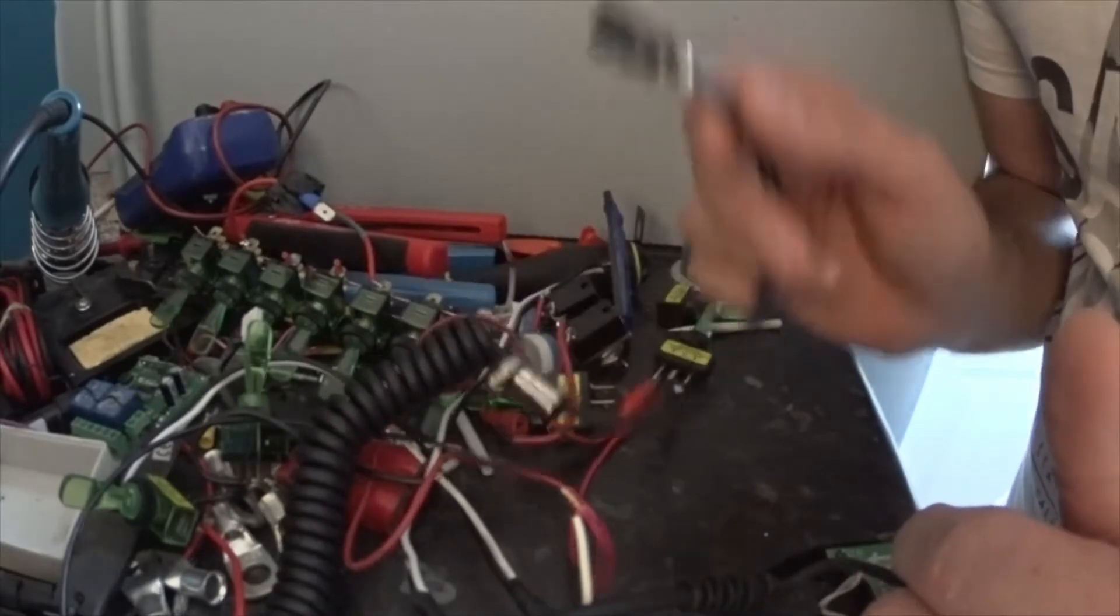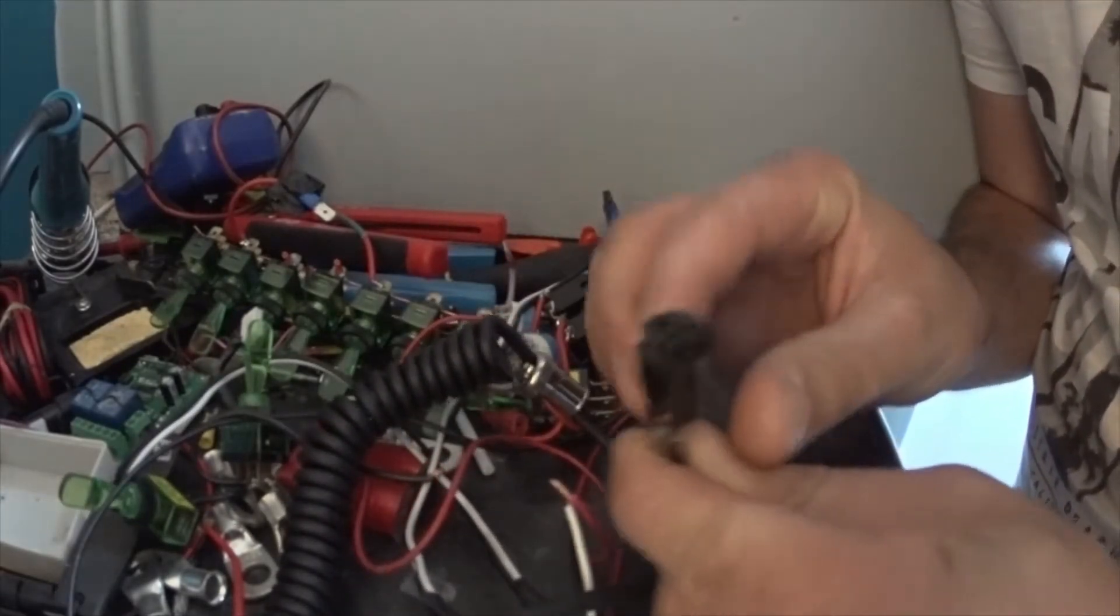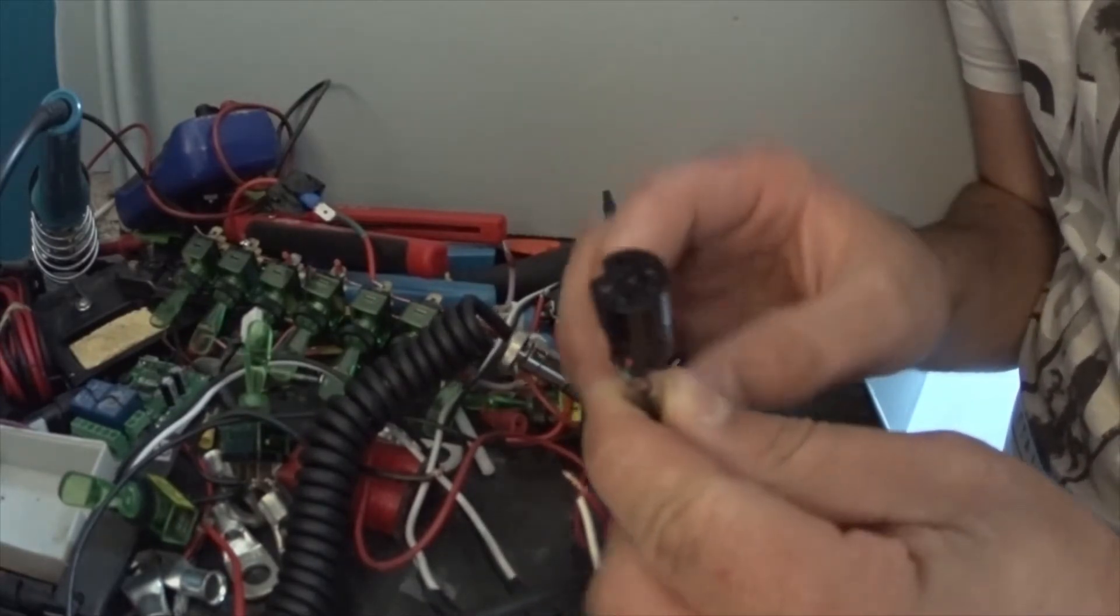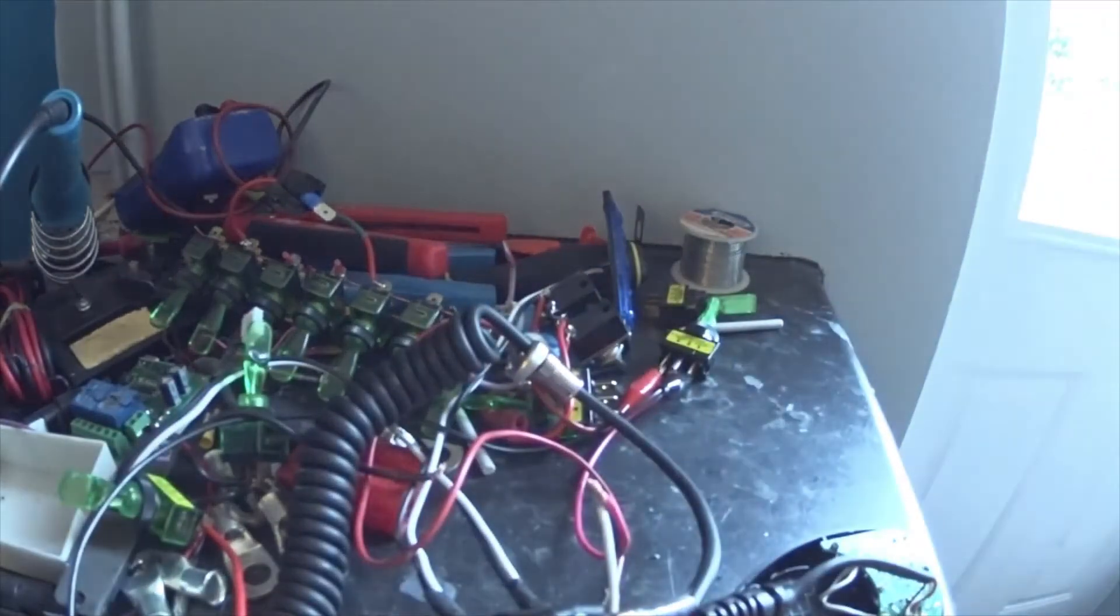So I thought I'd just document what each wire does on the 6 pin plug. They're obviously labelled up on the plug side of things 1 to 5 and then 6 is the centre. Now I'll just grab a bit of paper and run through what each one of those does.